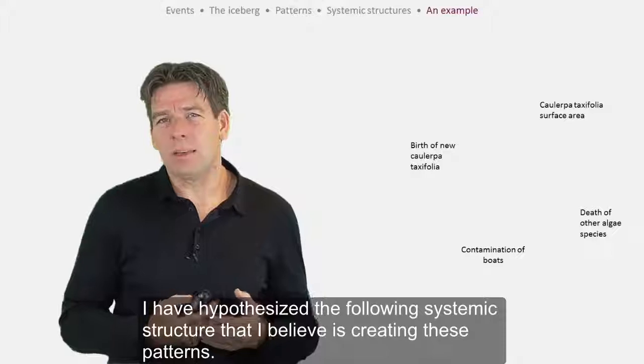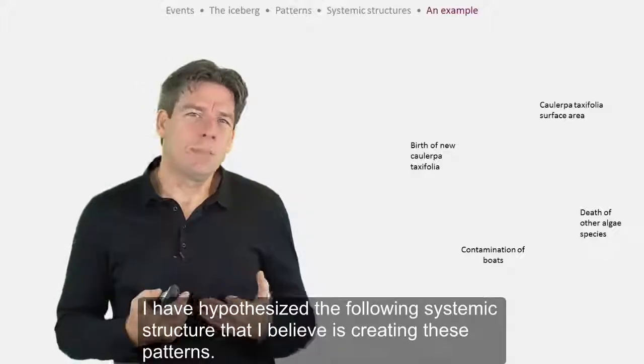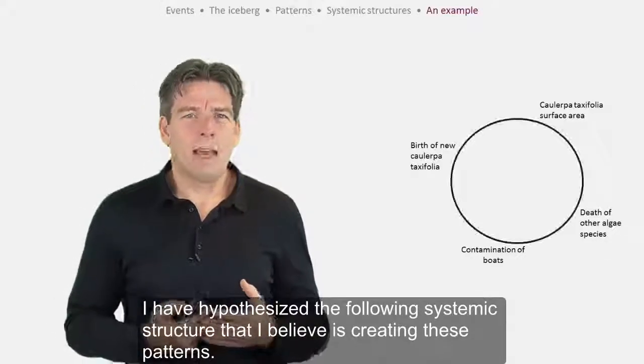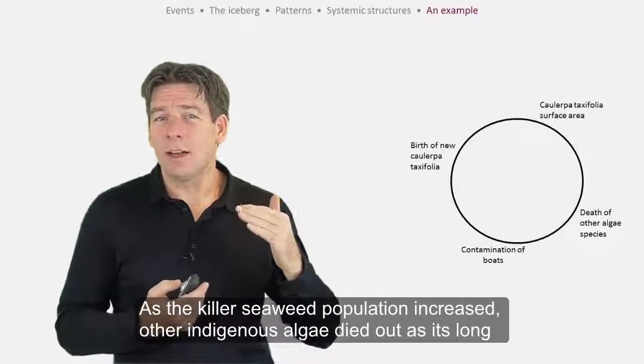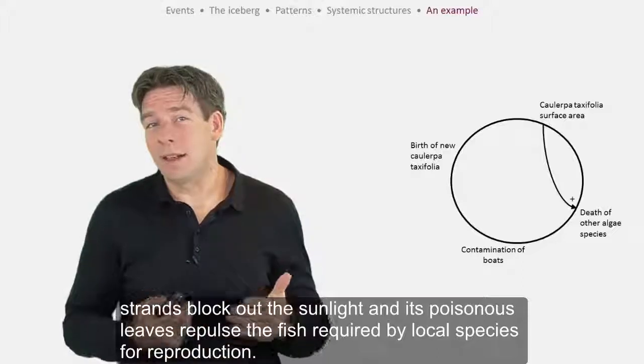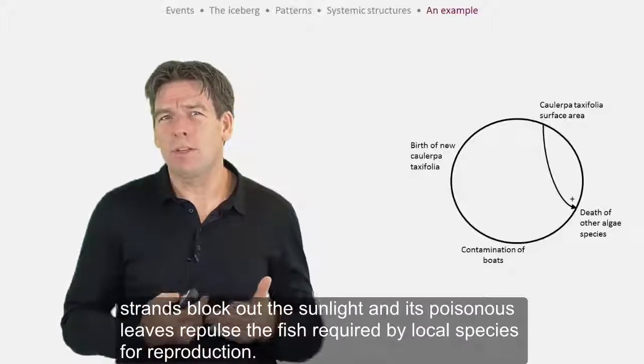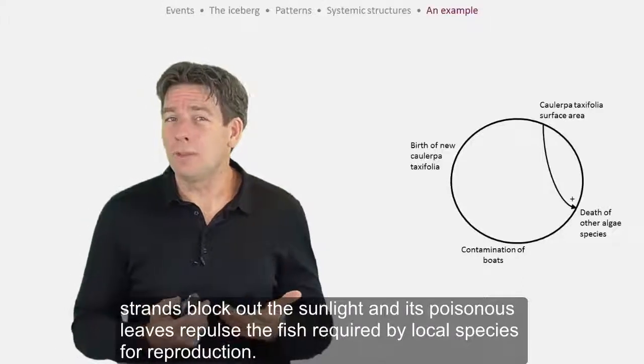I have hypothesized the following systemic structure that I believe is creating these patterns. As the Caulerpa seaweed's population increased, other indigenous algae died out as its long strands block out the sunlight and its poisonous leaves repulse the fish required by local species for reproduction.